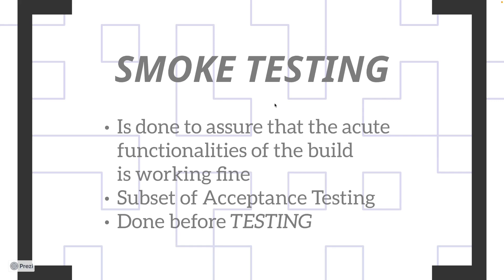That is all smoke testing is. Don't get confused with theoretical words — it is done before detailed testing and it is a subset of acceptance testing. In one line: smoke testing is done to validate the critical functionalities of the build before actually starting the detailed testing. Smoke testing is done to validate that the critical functionalities are working fine before starting the detailed testing — that is all smoke testing is.